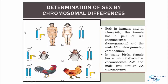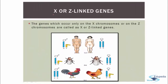Determination of sex by chromosomal differences. Both in humans and in Drosophila, the female has a pair of X chromosomes — they are also known to be homogametic — and the male are heterogametic, that is they contain X and Y chromosomes. In many birds, the female has a pair of dissimilar chromosomes, Z and W, and the male has two similar chromosomes — a pair of Z chromosomes. As you can see in this example, the male consists of two similar Z chromosomes and the female is comprised of dissimilar chromosomes Z and W.